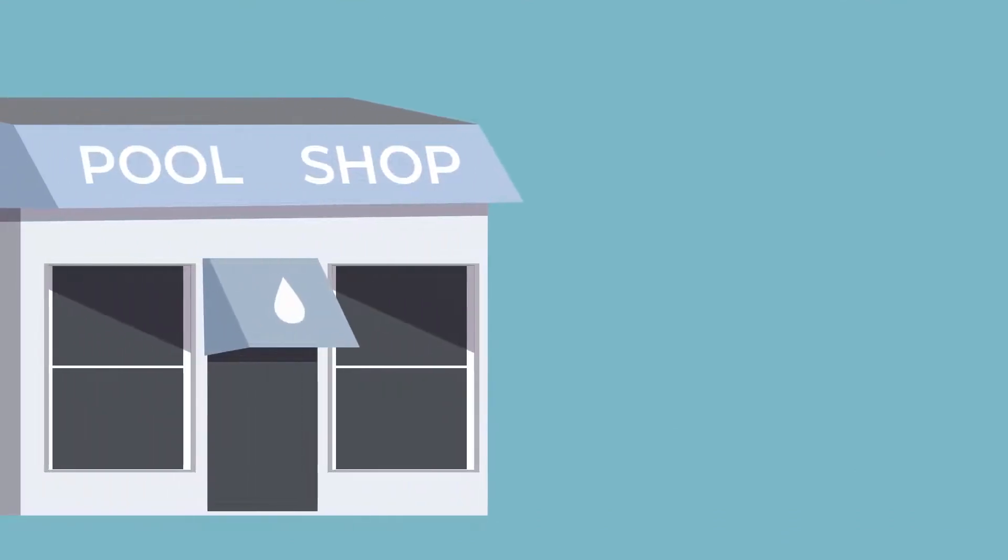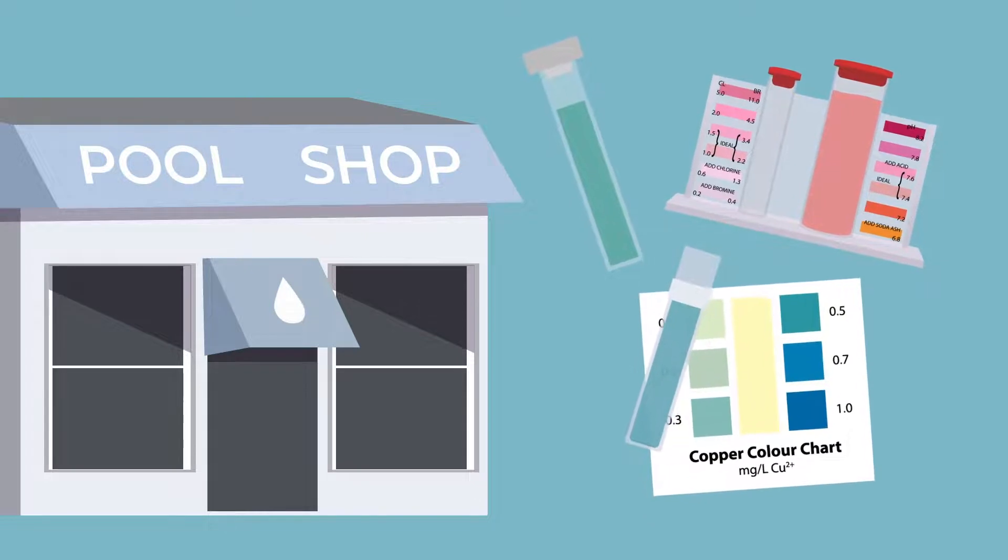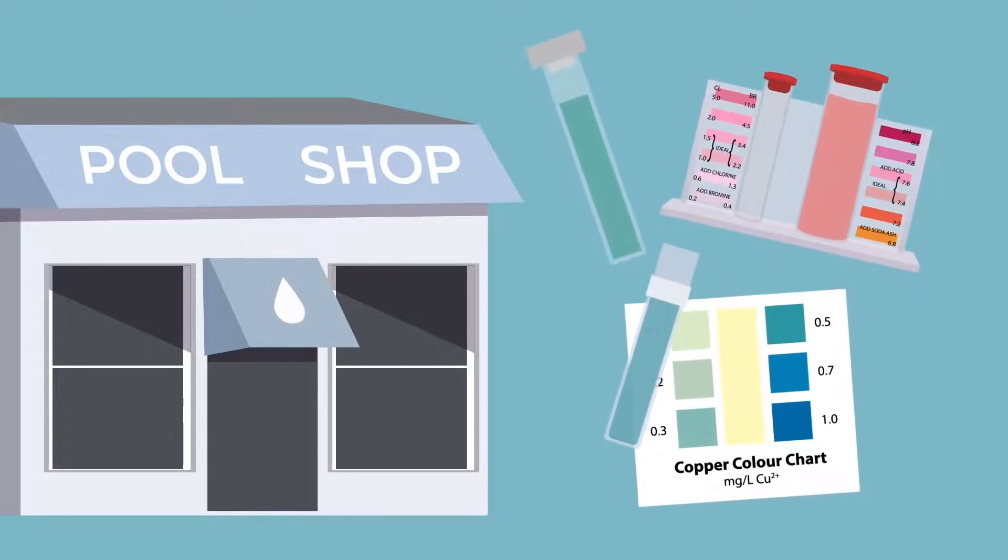If you have your water tested by a pool shop and the copper level appears out of range, please ensure the pH value is correct. Then use the naked copper test kit provided to compare to the shop's results before making adjustments to the copper levels.